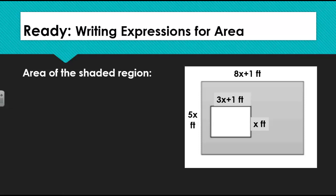In the Ready section of today's homework, we are asked to write and simplify an expression for the area of each figure. For the first example, we are given a larger rectangle which has dimensions 8x plus 1 feet by 5x feet, and inside that larger rectangle we have a smaller rectangle which has dimensions 3x plus 1 by x.